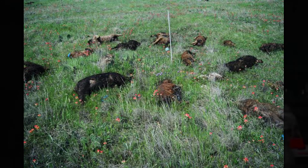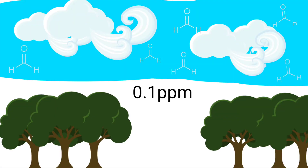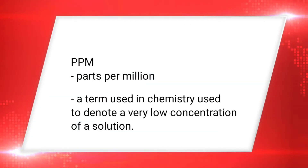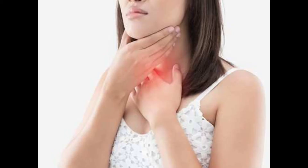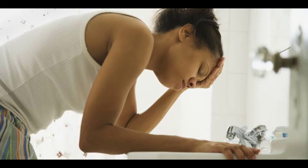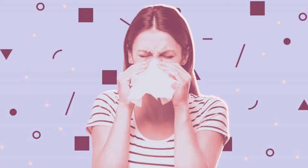What is the effect of formaldehyde on humans? When it is present in the air at levels exceeding 0.1 ppm — a very low concentration — some individuals may experience adverse effects such as watery eyes, burning sensations in the eyes, nose, and throat, coughing, wheezing, nausea, and skin irritation.